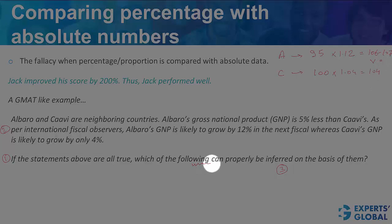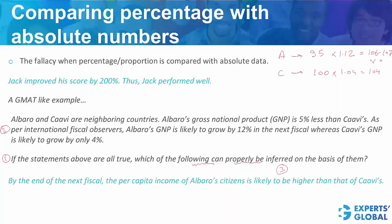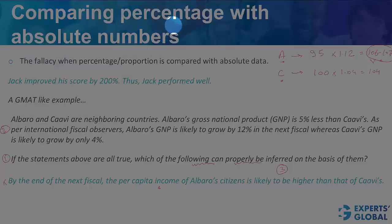Which of the following can properly be inferred? Looking at this answer choice, we know the total GNP is going to be higher, but whether the per capita income is going to be higher, we don't know. This answer choice is not correct — it commits the mistake of comparing percentage with absolute numbers.